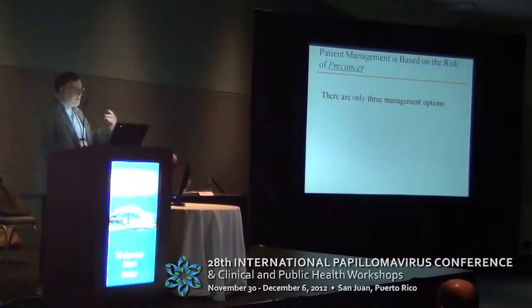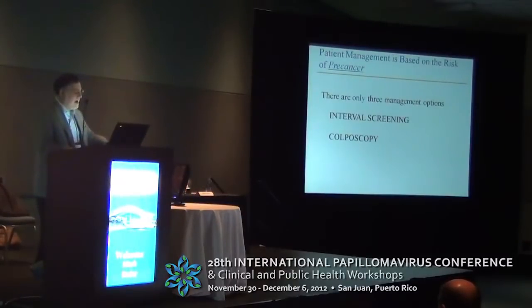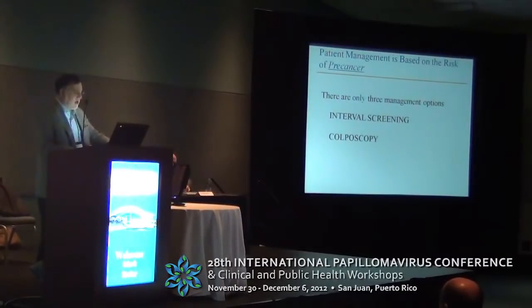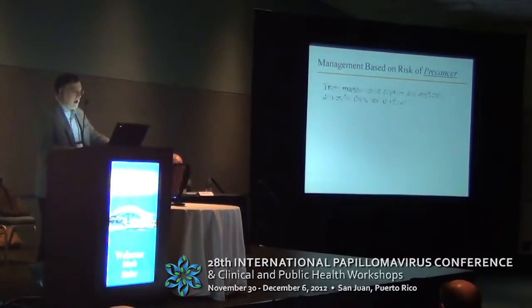Based on these three types of biology, we have basically only three things we can do to patients. We can have some form of repeat screening. We can take them to colposcopy to try and histologically find a CIN3 or significant precancer. Or we can treat the patient if the risk is high enough. There are some patients where clearly the risk is so high that it will trump the outcome of the biopsy.